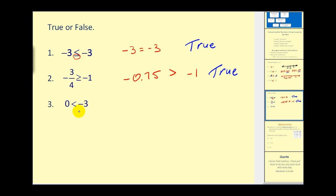And lastly, 0 is less than negative 3. Again, we can always go back to the number line. Is 0 less than negative 3? No, because 0 is to the right of negative 3. So this would be false.